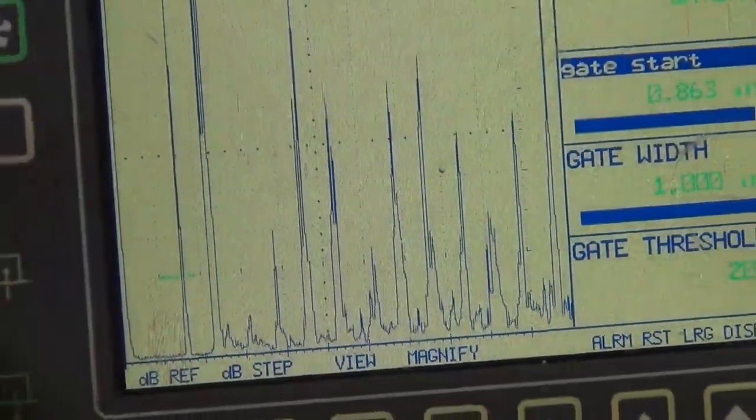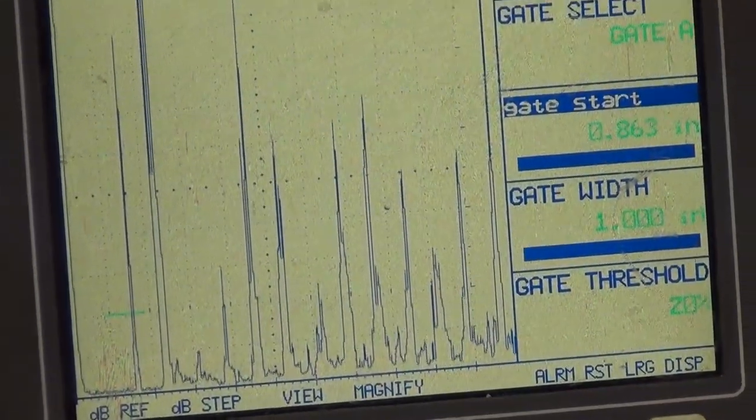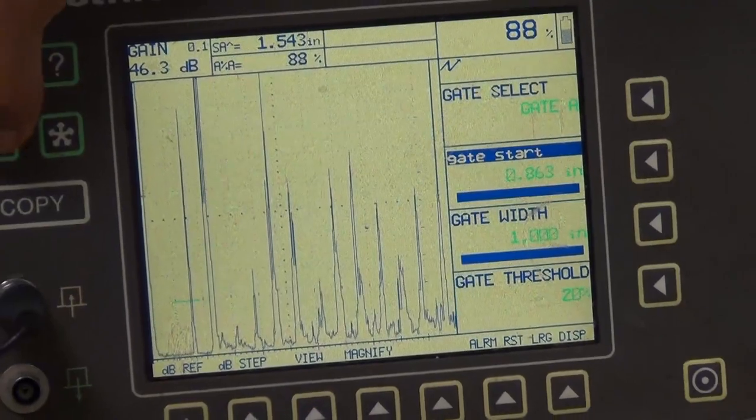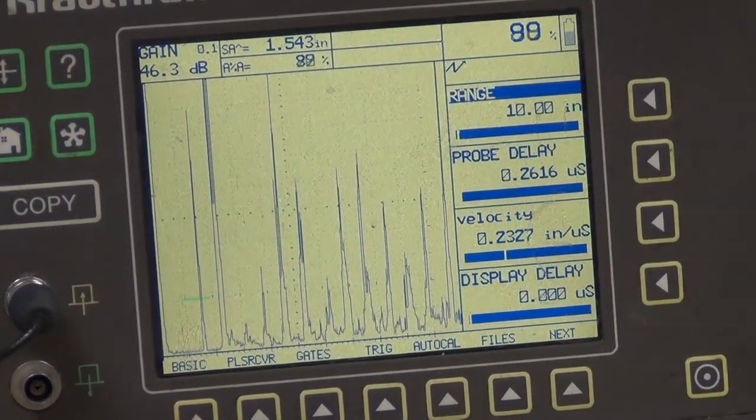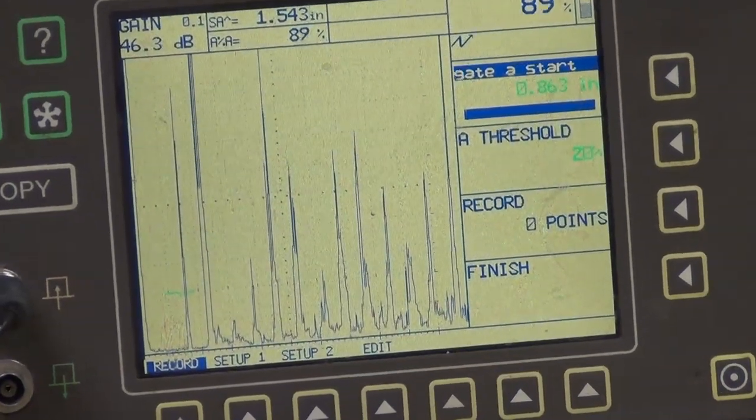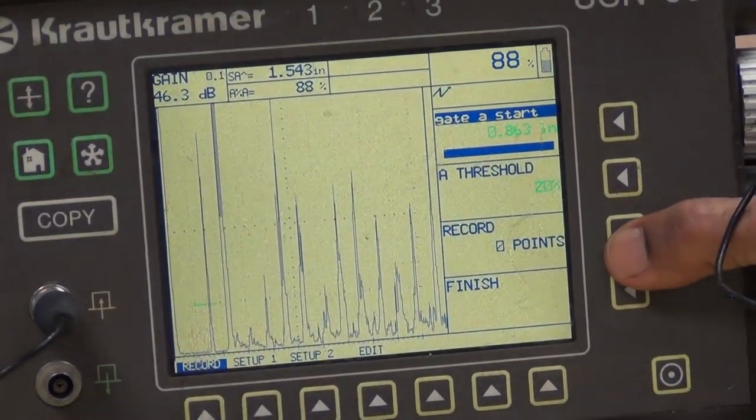We adjust the gain so the signal is about 80 to 90 percent. You can see it's about 90 percent. Then I go to the DAC menu and start recording the signals. This is the first signal, and I record it.